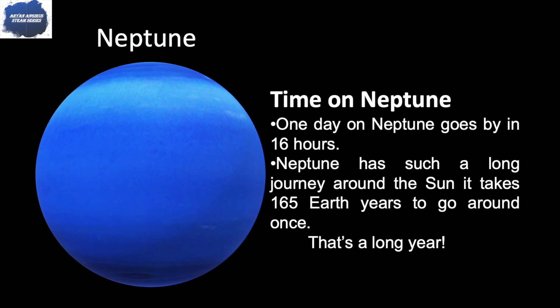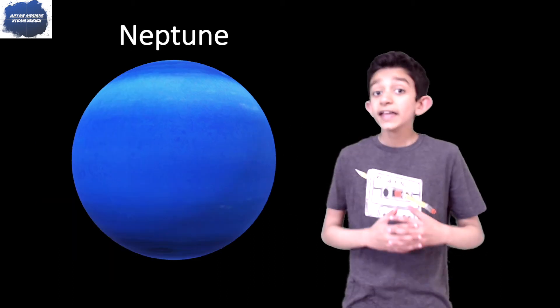Time on Neptune: one day on Neptune goes by in 16 hours. Wow, I wish Earth days were as short as that. Neptune takes such a long journey to go around the Sun—it takes 165 Earth years to go around once. That's a long year.